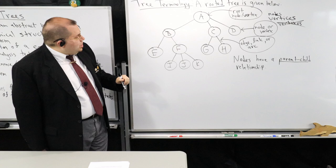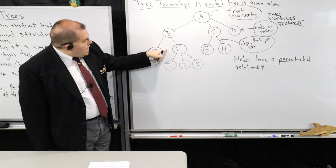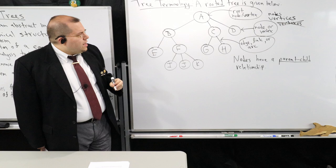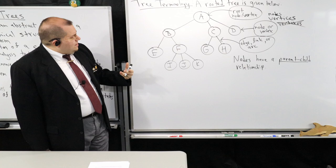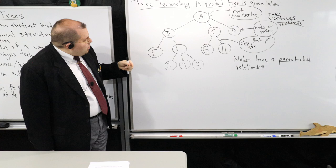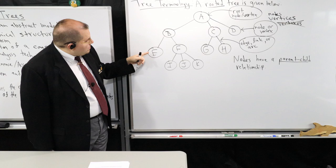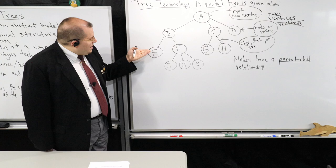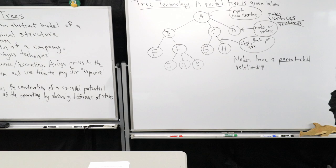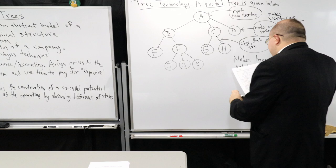For example, node B's parent is A. The children of B are E and F, but the descendants of B are E, F, I, J, and K. The ancestors of J are F, B, and A. If two nodes share the same direct parent — like E and F are both children of B — they are called siblings.